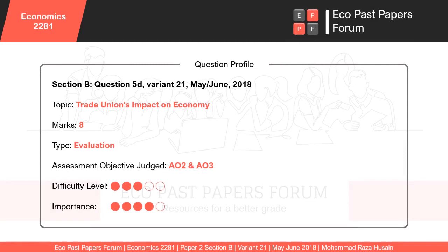Today we will be solving an eight-mark essay question from Paper 2, Section B. This question is about trade unions — specifically, the impact of trade unions on the economy. The question is taken from May/June 2018, Variant 21, Question 5D, worth eight marks. It is an evaluation-type question where you have to present contrasting viewpoints, and your analysis and evaluative skills are being judged.